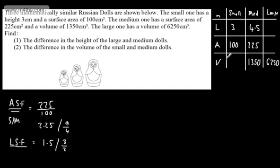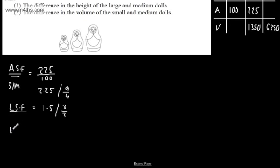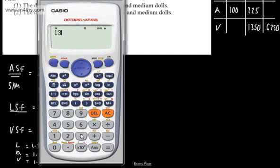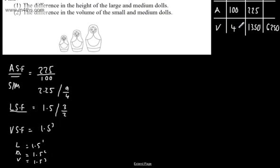Now if I want to work out the volume of the small doll, the volume scale factor is 1.5 cubed — because linear is 1.5 to the power of 1, area is 1.5 squared, and volume is 1.5 cubed. So I divide 1,350 by 1.5 cubed, and that gives me the volume of the small doll as 400 centimetres cubed.